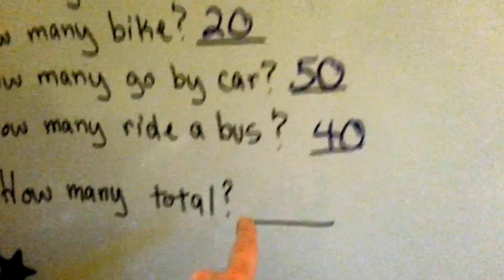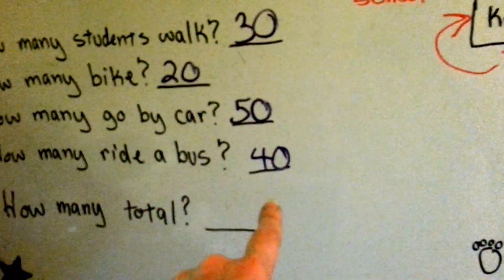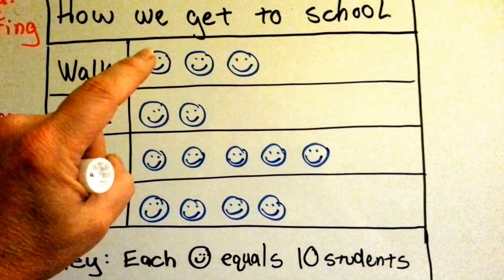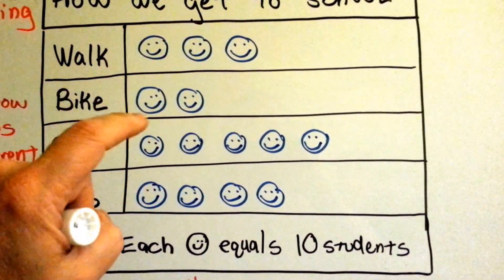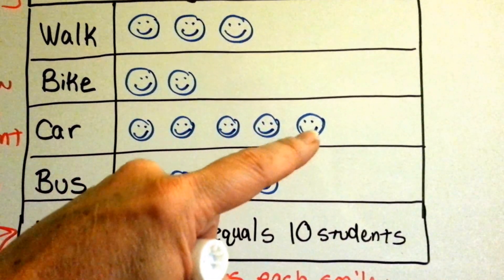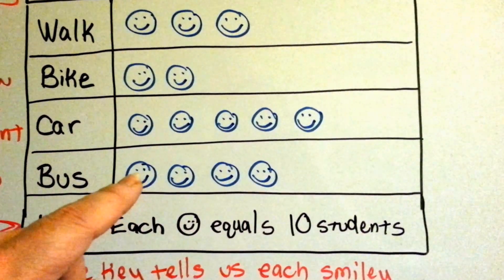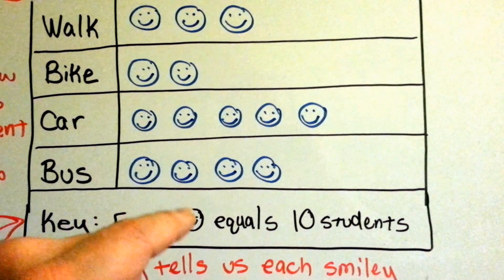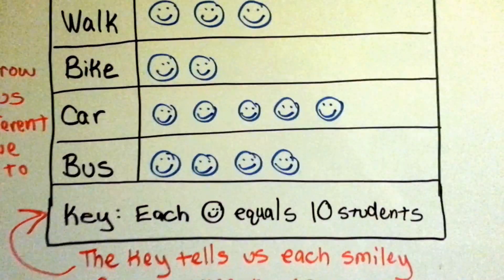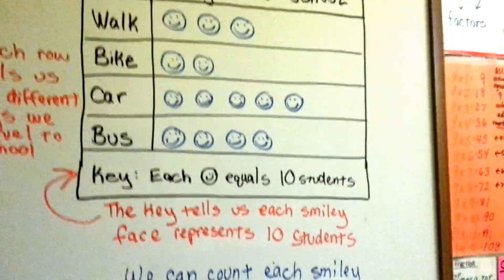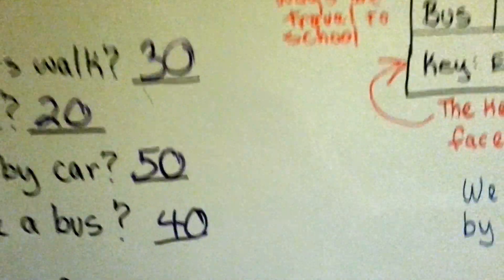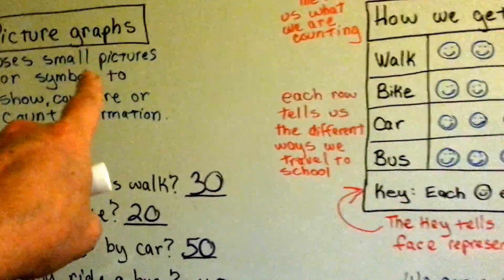How many total? Now we have to count all of them. So we're going to count all of these: ten, twenty, thirty, forty, fifty, sixty, seventy, eighty, ninety, one hundred, one hundred ten, one hundred twenty, one hundred thirty, one hundred forty. We've counted a hundred and forty students and how they get to school with our picture graph.